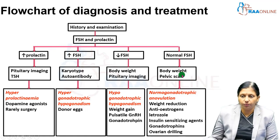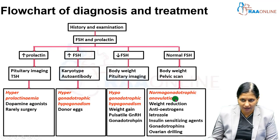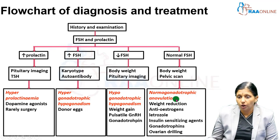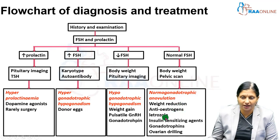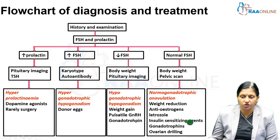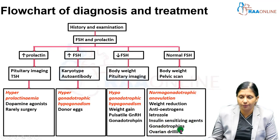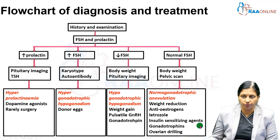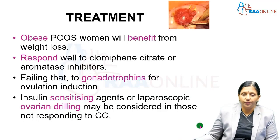If FSH is normal, body weight is checked and a pelvic ultrasound is done. These patients are normogonadotropic anovulatory — WHO Group 2. Management includes weight reduction, antiestrogens, ovulation induction with letrozole, and for PCOS patients, insulin-sensitizing agents like metformin and myoinositol, as well as gonadotropins. Ovarian drilling may also be an option.